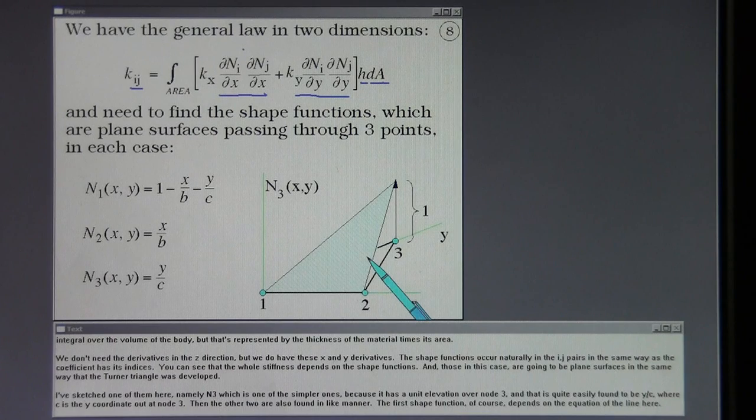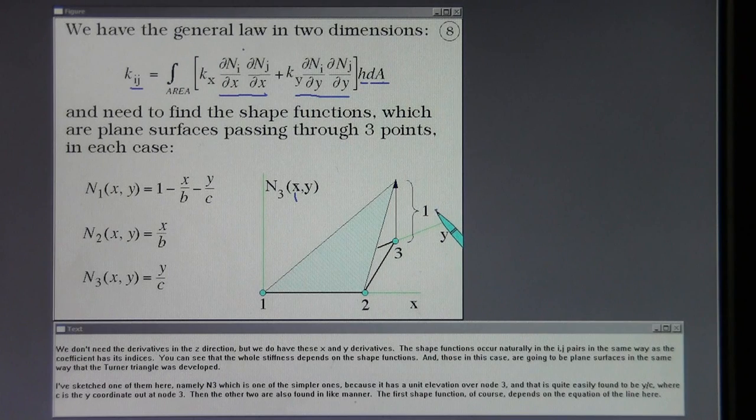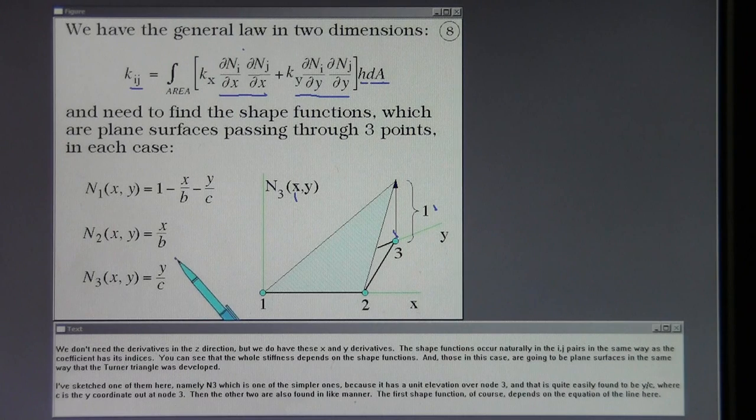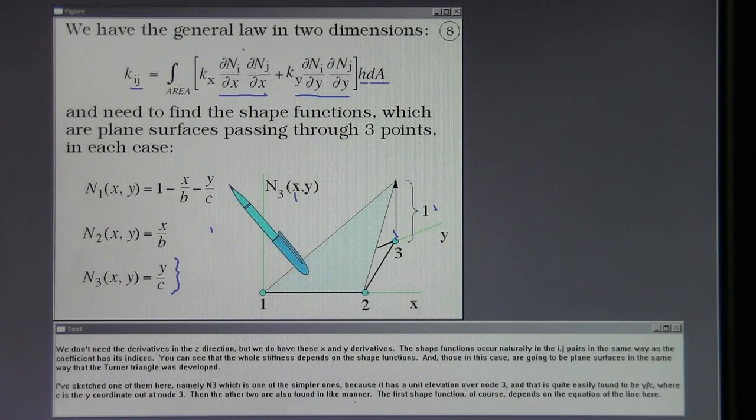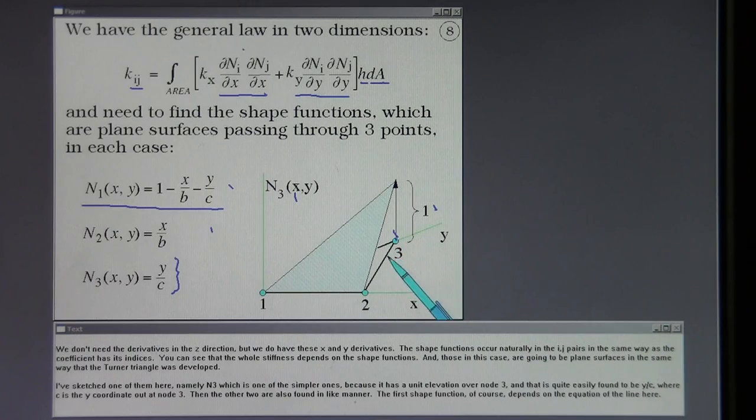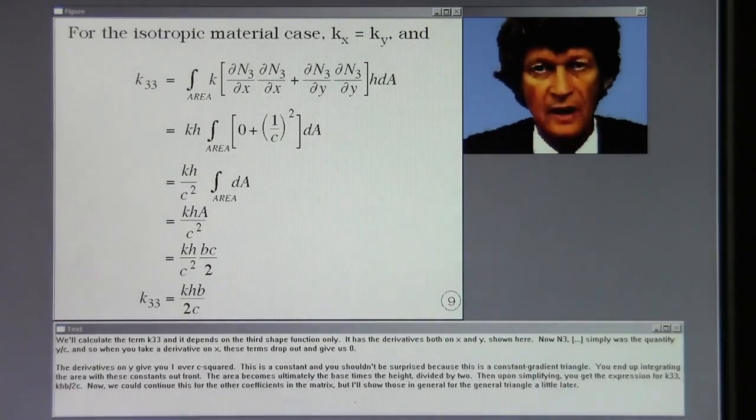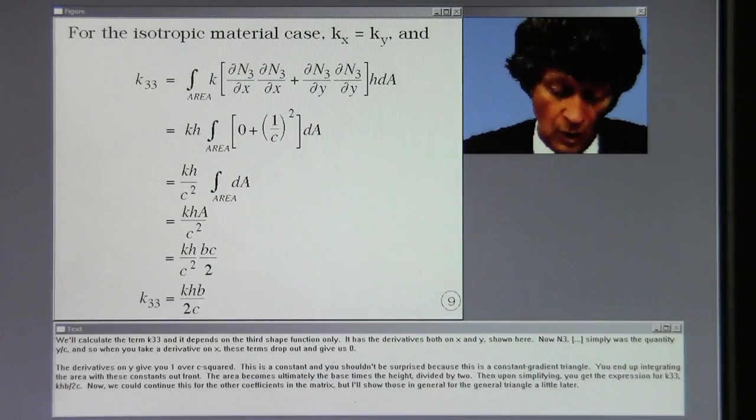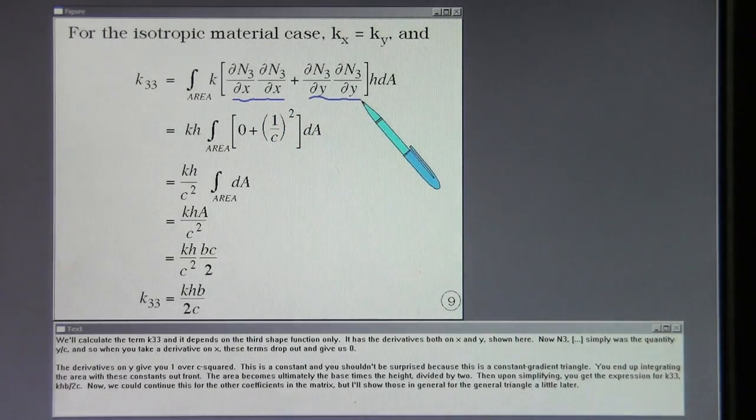I've sketched one of them here, namely N3, which is one of the simpler ones because it has a unit elevation over node 3, and that is quite easily found to be y over c, where c is the y-coordinate out at node 3. Then the other two are also found in like manner. The first shape function, of course, depends on the equation of the line here. We'll calculate the term K33, and it depends on the third shape function only.